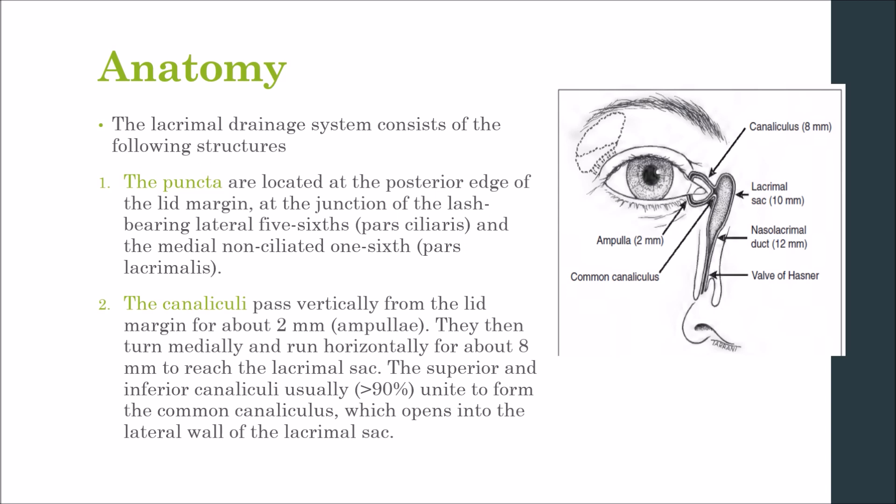The lacrimal drainage system consists of the following structures. Number one are the puncta, which are located at the posterior edge of the lid margin, at the junction of the lash-bearing lateral five-sixths and the medial non-ciliated one-sixth, called the caruncula lacrimalis. They are small holes shown in the diagram here, and they can be easily inspected.